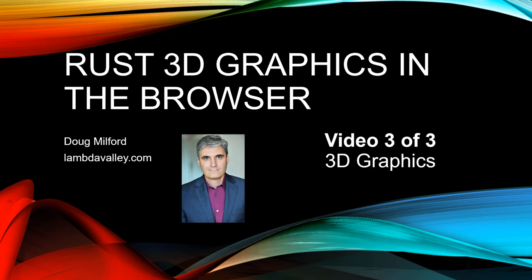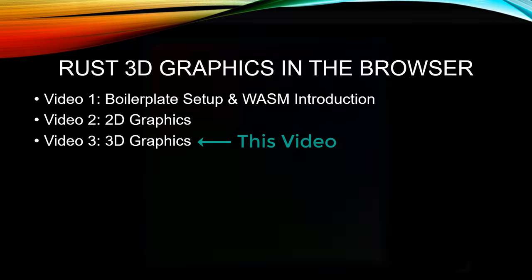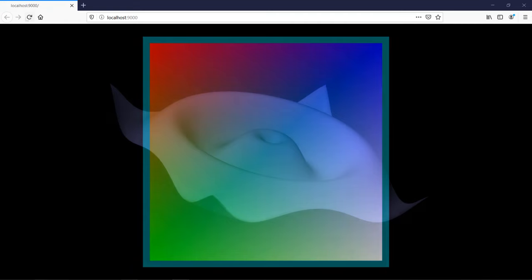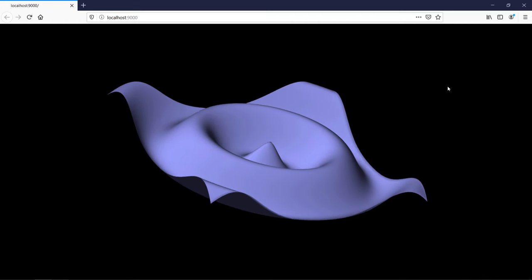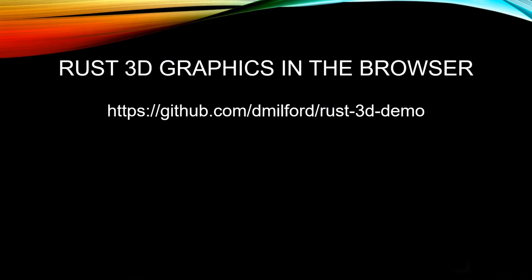Welcome to this video on 3D graphics in the browser. My name is Doug Milford from Lambda Valley. In this video, we'll be completing our mini-series. The first video was on boilerplate setup and WASM introduction. The second was on two-dimensional graphics and introduced some basic graphic concepts. This is the pattern we created in the two-dimensional video, and this is what we'll be building: a 3D sine wave that you can move with your mouse. The final project can be found on GitHub.